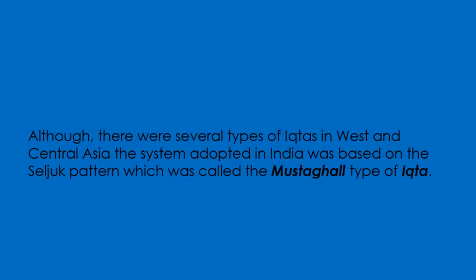Although there were several types of Iqtahs in Western Central Asia, the system adopted in India was based on the Saljuk pattern, which was called the Mustagal type of Iqtah. In the Mustagal type of Iqtah, no hereditary rights were permitted.